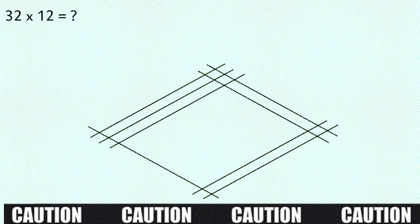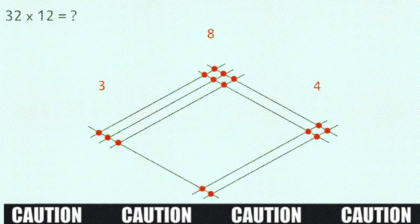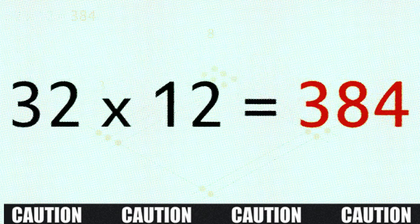And starting from the right start counting the dots. 1, 2, 3, 4. 1, 2, 3, 4, 5, 6, 7, 8. Write that here. And finally 1, 2, 3. 3, 8, 4. 384. There we have our answer. Simples.